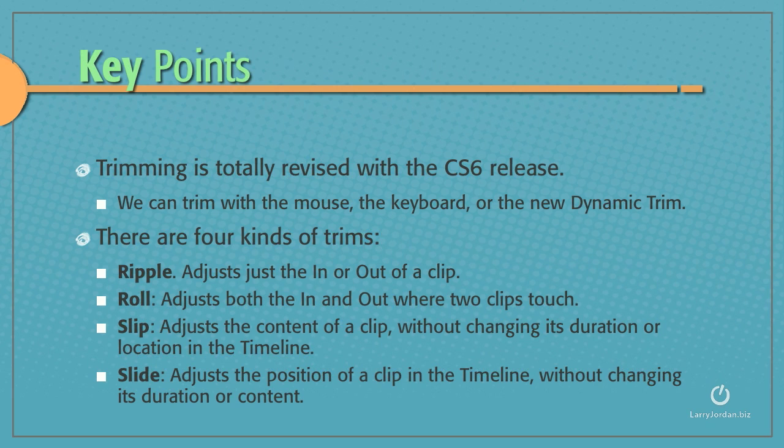Ripple, which adjusts just the in or the out of a clip — it adjusts one side. Roll, which adjusts both the in and the out where two clips touch — it adjusts both sides at the same time.